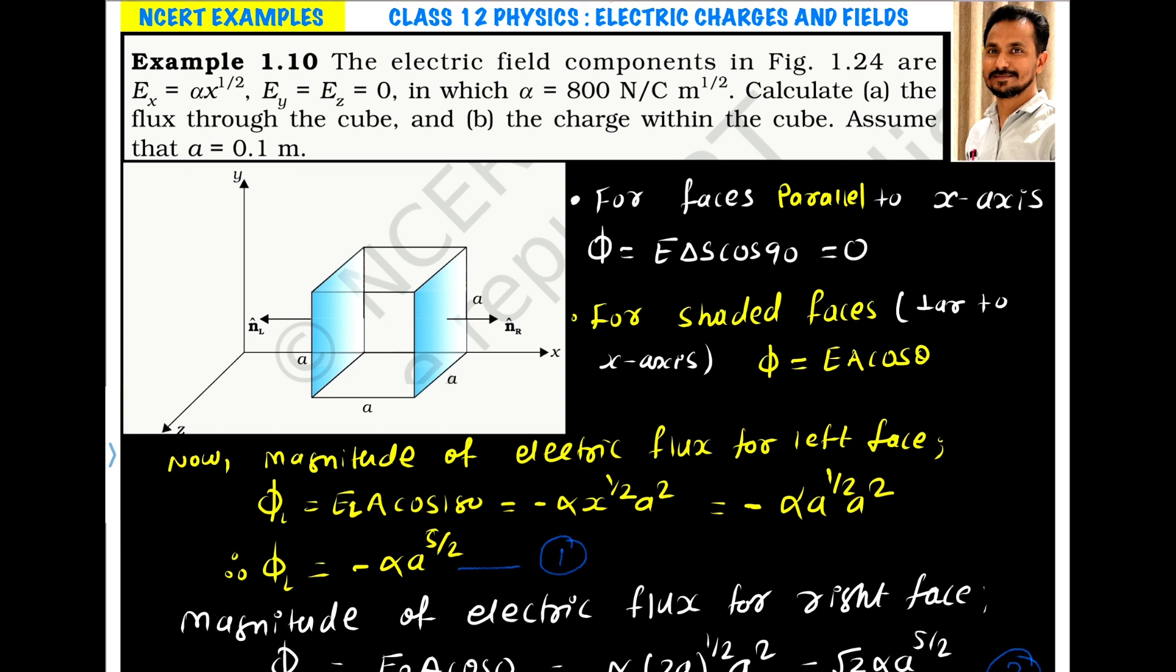If the field is uniform, then the net flux will be zero. But the field is non-uniform. The field is along x direction, so it will produce flux through the faces which are perpendicular to x direction or whose area vectors are parallel to x.